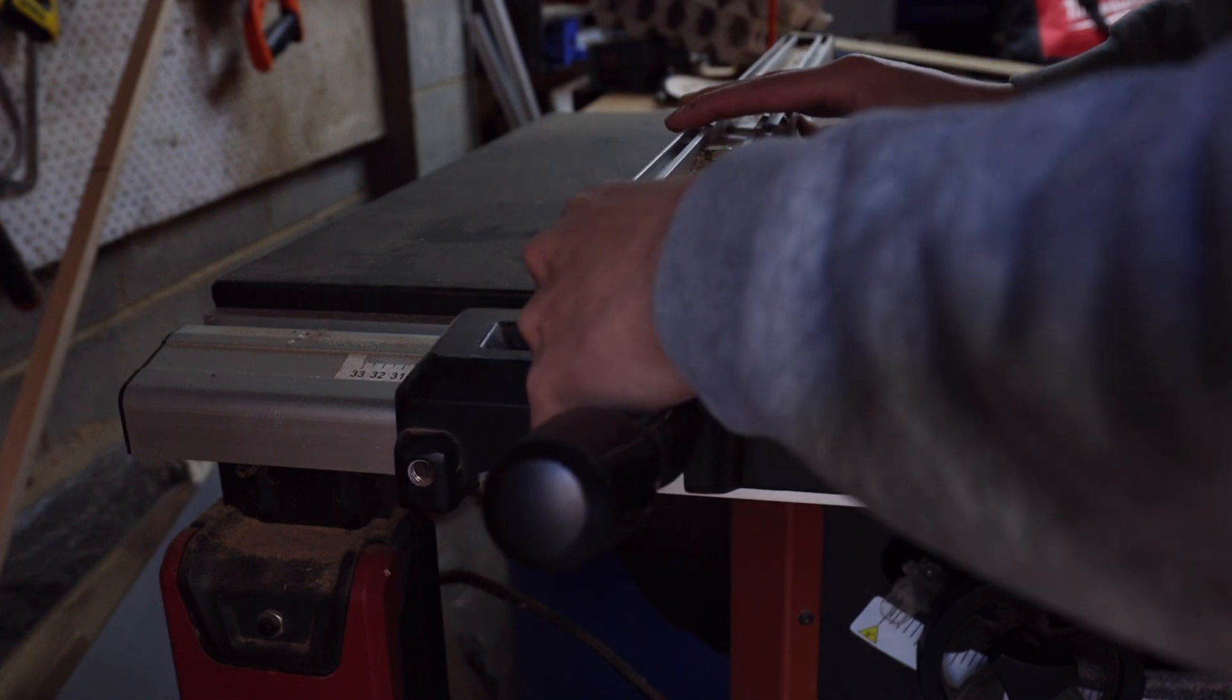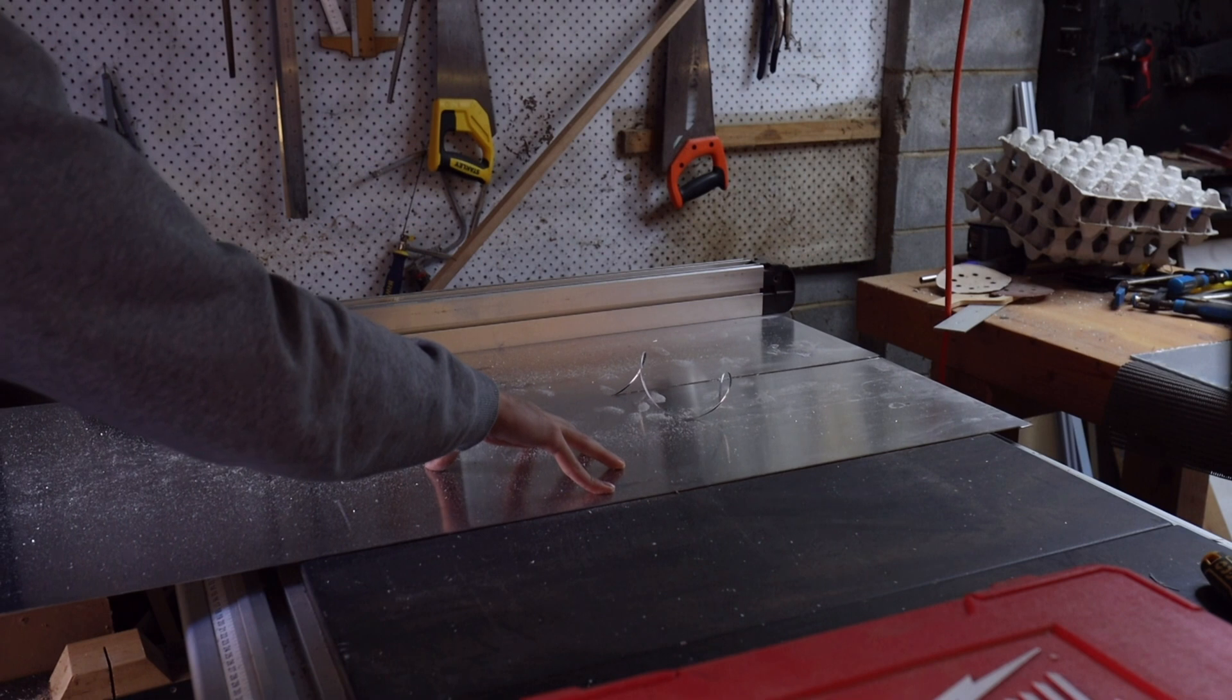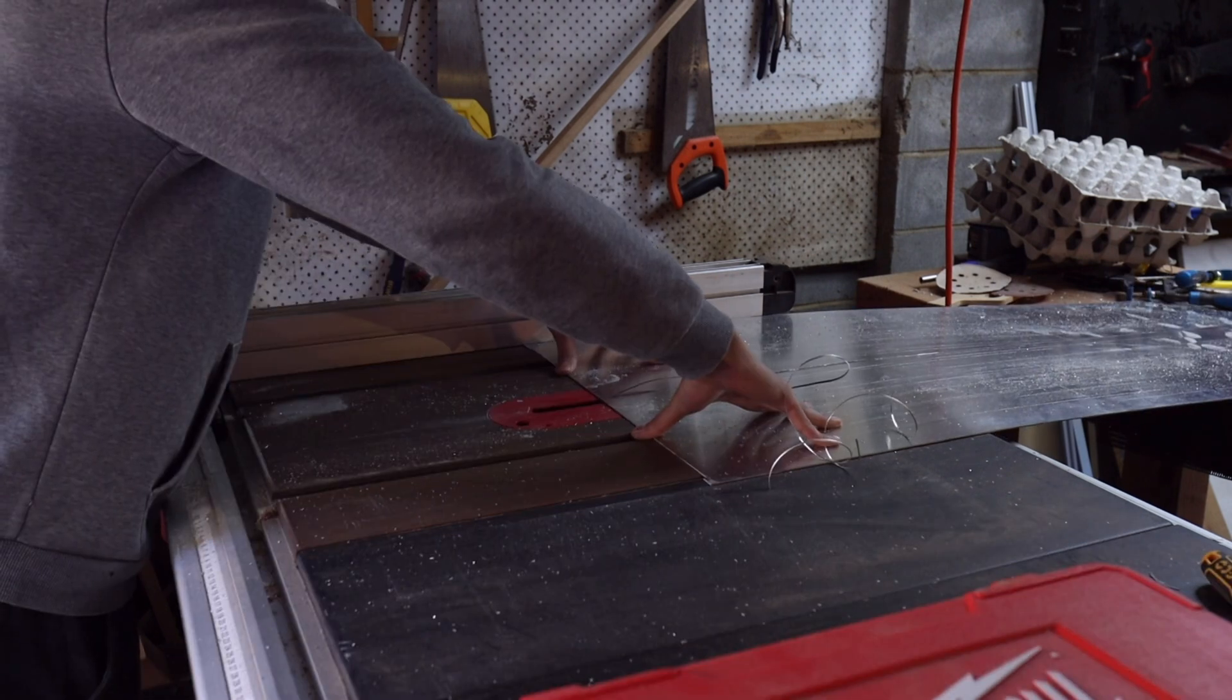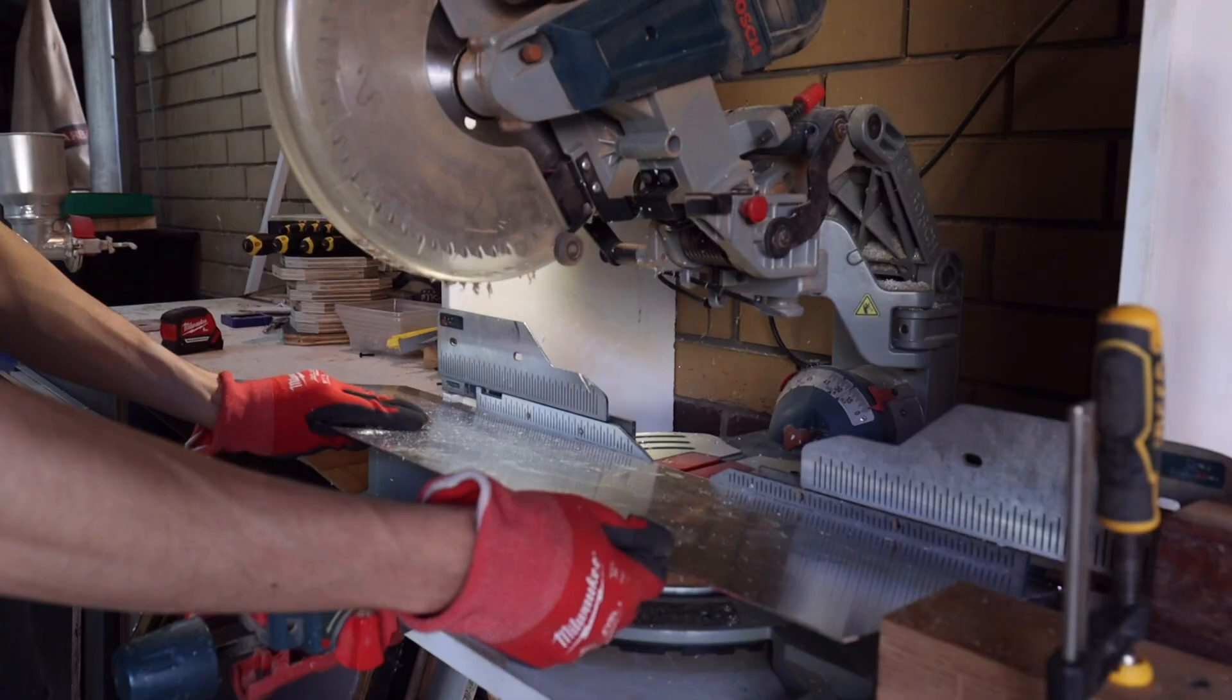To gently and evenly distribute the heat from the heat mat to the entire bottom of the nest box, I cut up some 1.5mm thick aluminum sheet to the right size and rounded the corners to the shape of the tub so it would fit nicely.